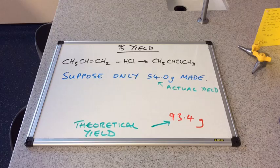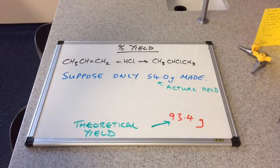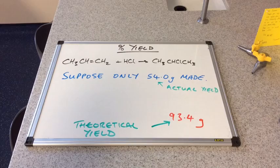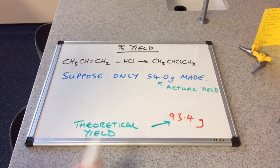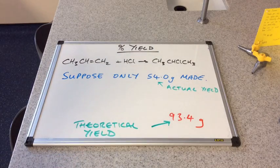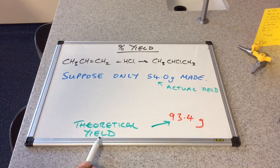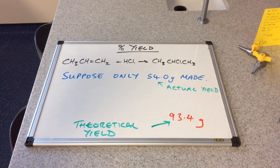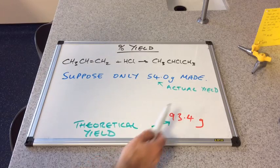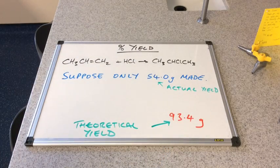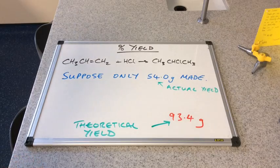What we're going to do is suppose that only 54 grams of product were made. This is what we refer to as the actual yield. We've got two yields on the go: the theoretical yield, that's how much we should get assuming 100% conversion, and the actual yield, which is what we actually get.